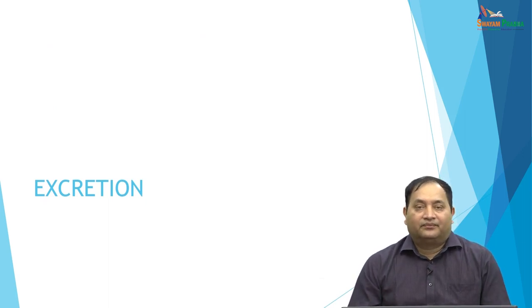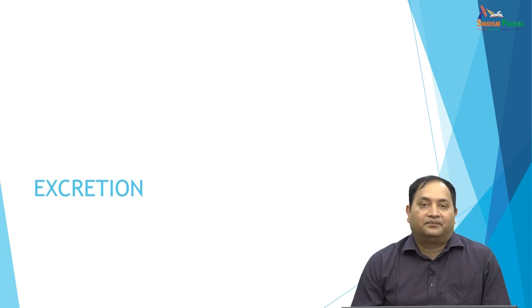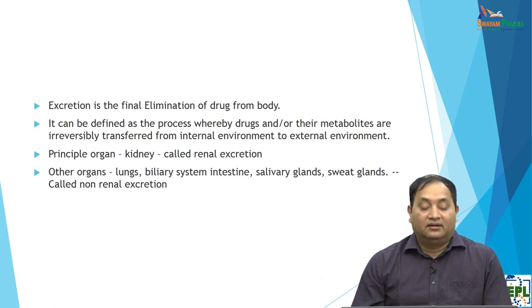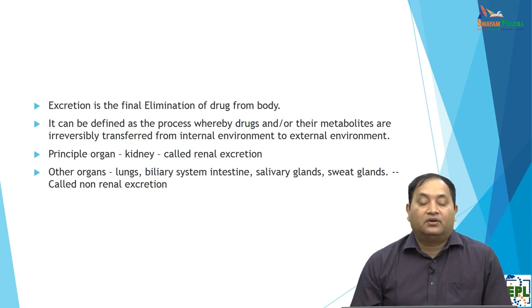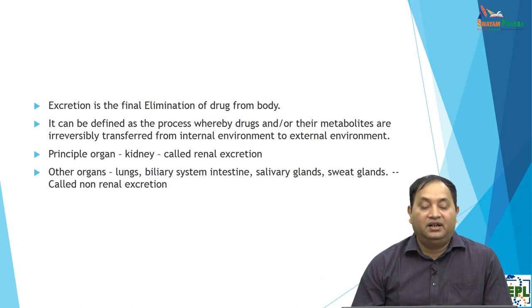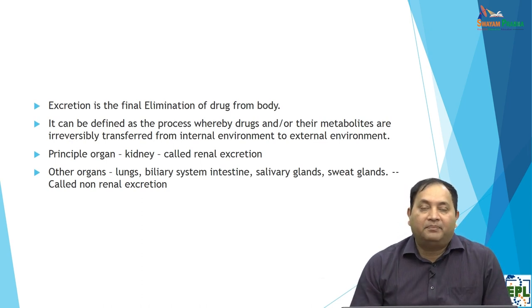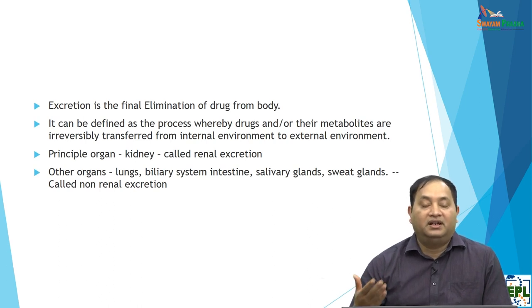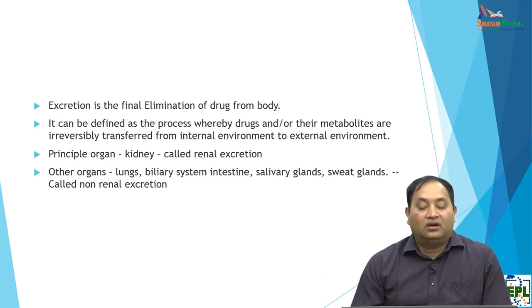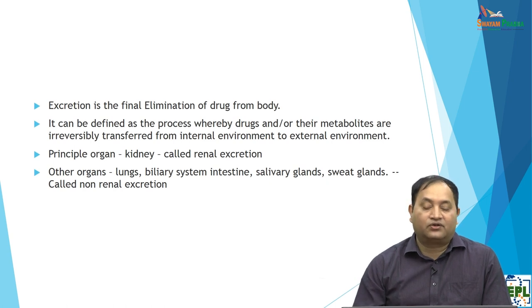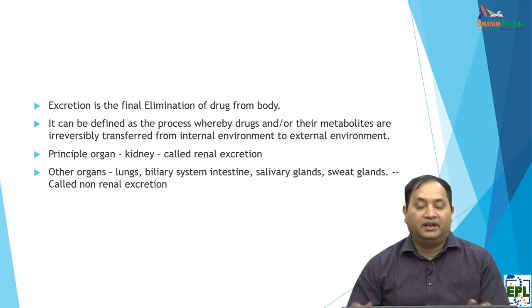Once a drug is metabolized — through Phase 1, Phase 2, enzymatic, non-enzymatic, microsomal, or non-microsomal pathways — it ultimately needs to be excreted. The body's responsibility is to detoxify and eliminate drugs. Excretion is the final removal of the drug from the body. It is defined as the process whereby drugs or their metabolites are irreversibly transferred from the internal to the external environment, meaning out of the body. The principal organ responsible is the kidney — renal excretion. Other routes include the lungs (inhalation), biliary excretion into the intestine, stool, salivary glands, and sweat glands, including excretion in tears.